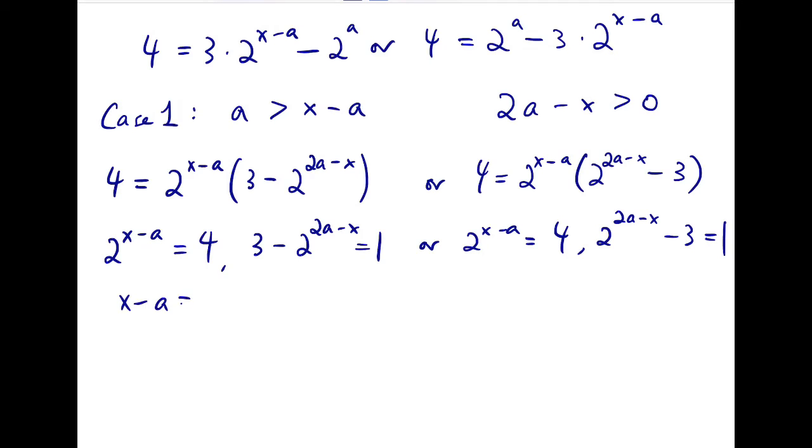Then we can solve for x and a. x minus a in this case is 2, and then 2 to the 2a minus x is 2, so 2a minus x is 1. Now for the case on the left, these two equations are two linear equations in two unknowns, and we can easily solve it by adding them. So solving, a is 3 and then x is 5.